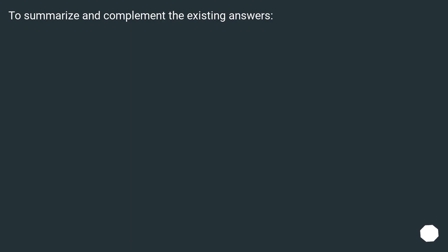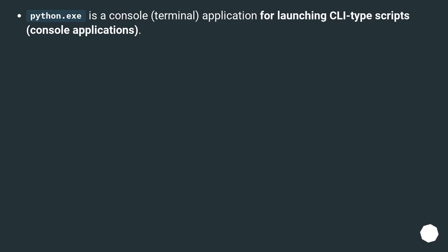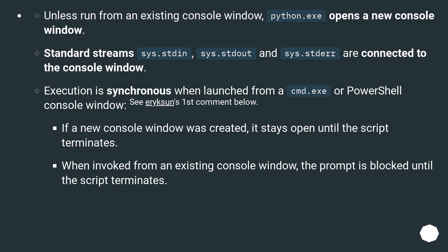To summarize and complement the existing answers: python.exe is a console, terminal application for launching CLI-type scripts and console applications. Unless run from an existing console window, python.exe opens a new console window. Standard streams sys.stdin, sys.stdout, and sys.stderr are connected to the console window.